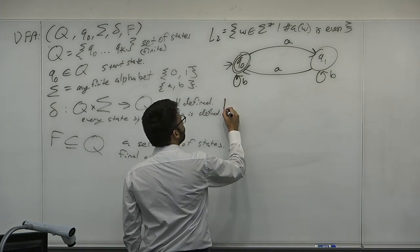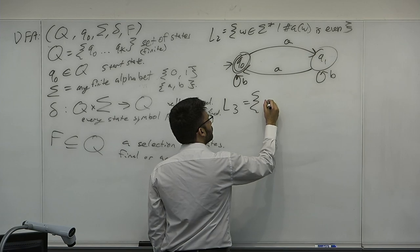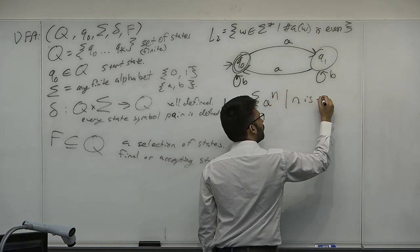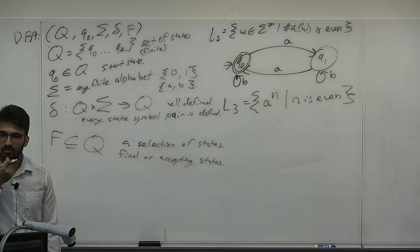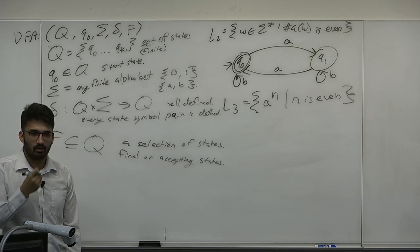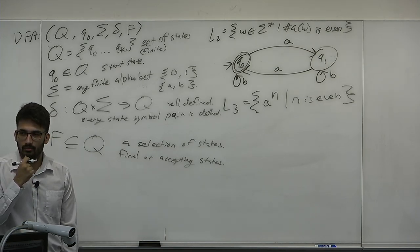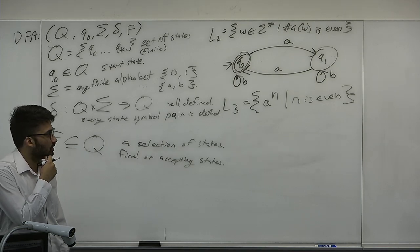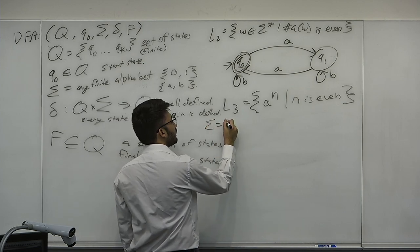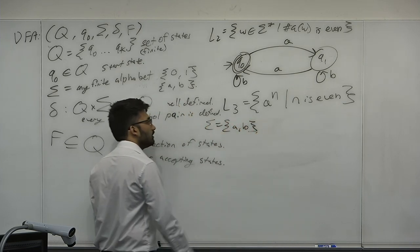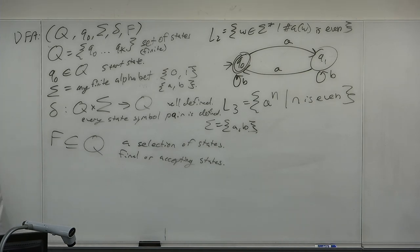Now let's do L3. The alphabet is {A, B}, but the words only contain A's — that's an important feature of this language. Think about what this kind of DFA will look like.